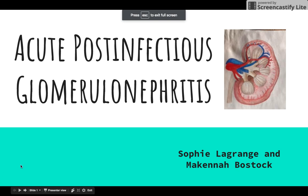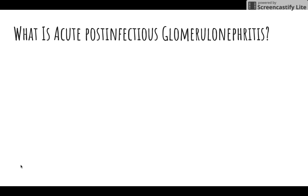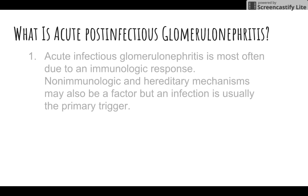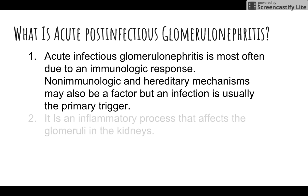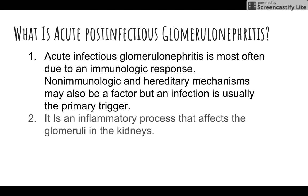Acute post-infectious glomerulonephritis. Acute infectious glomerulonephritis is most often due to an immunological response. Non-immunological and hereditary mechanisms may also be a factor, but an infection is usually the primary trigger. It is an inflammatory process that affects the glomeruli in the kidneys.